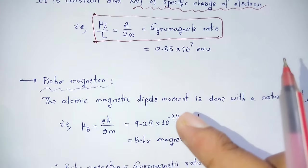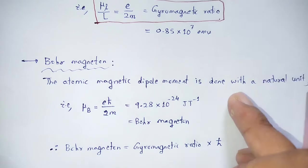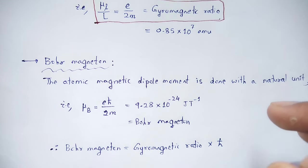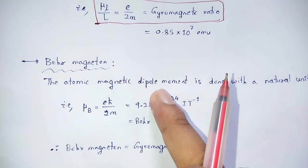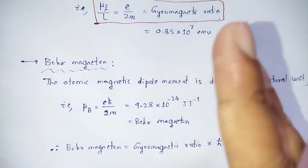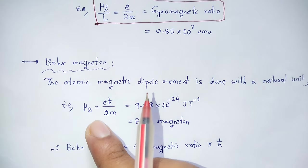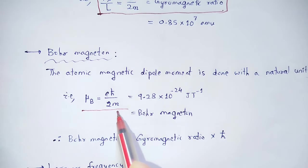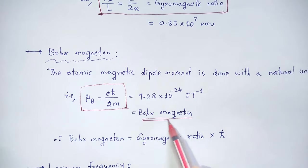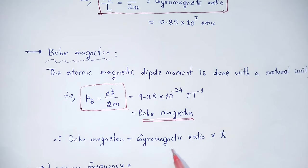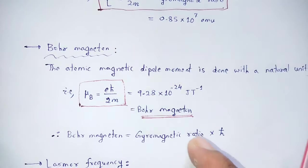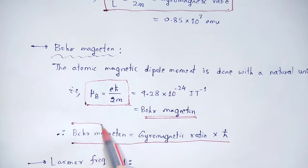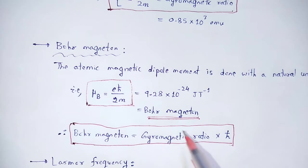Next: Bohr magneton. The atomic magnetic dipole moment is measured in a natural unit. The value: mu_B equals eħ divided by 2m, where e is the charge of an electron, ħ is h divided by 2π (reduced Planck's constant), and m is the mass of an electron. The gyromagnetic ratio e divided by 2m multiplied by ħ gives the Bohr magneton mu_B.